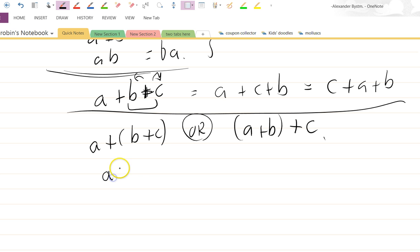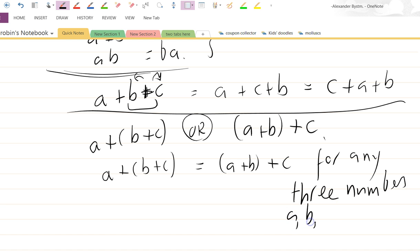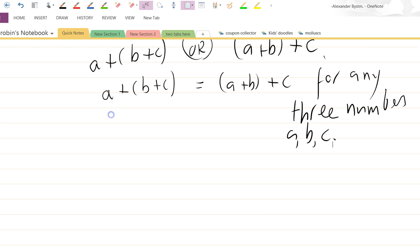And so, of course, you know that it doesn't make any difference. A plus B plus C equals A plus B plus C for any three numbers A, B, and C. And I'm just going to give you an example. I'm going to say A equals, let's say, five, B equals minus one and C equals two.